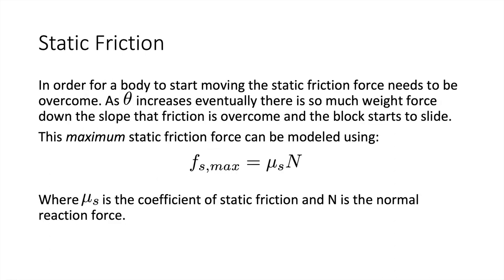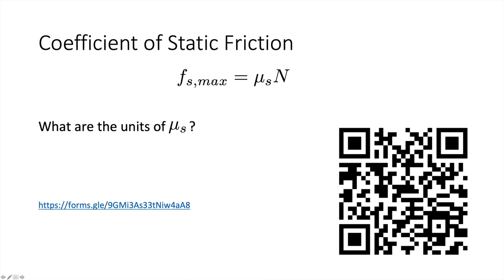The block experiences static friction preventing it from sliding down the plane. To start moving, the static friction must be overcome. As θ increases, eventually the weight force down the slope overcomes friction and the block slides. The maximum static friction force is modeled as F_s(max) = μ_s × N, where μ_s is the coefficient of static friction and N is the normal force. Since both sides are forces in newtons, μ_s is unitless.